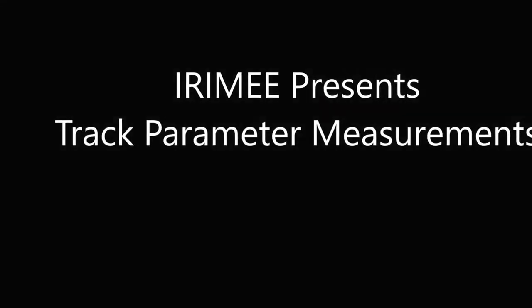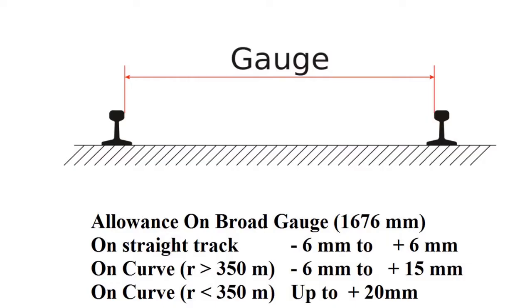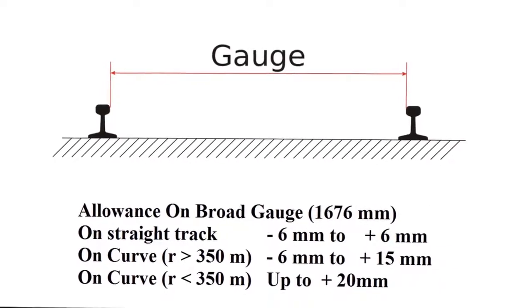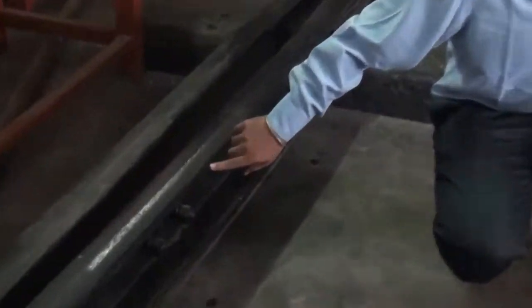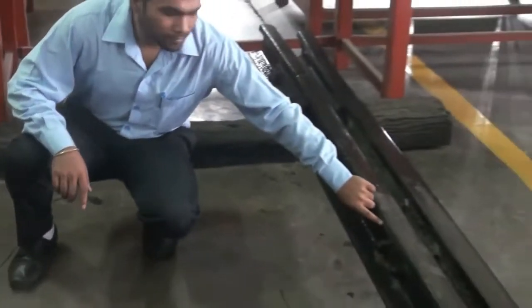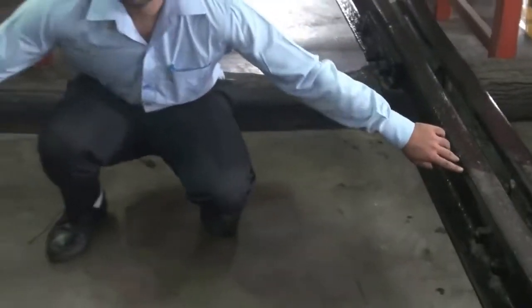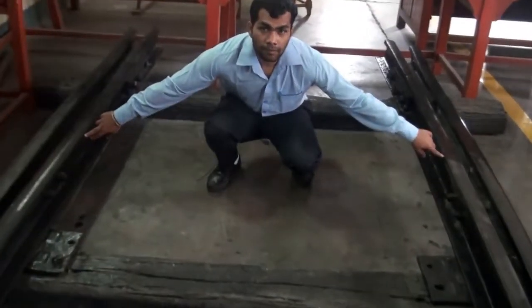Indian Railways track parameter measurements. Let us first learn about track gauge measurement. A railway track has two rails. The perpendicular distance between the inner faces of these rails is known as the gauge of the track.